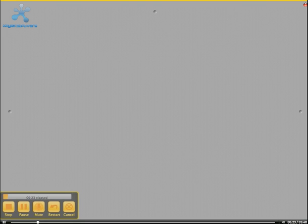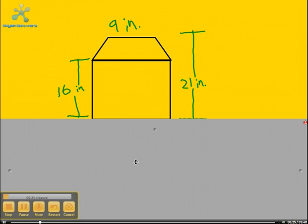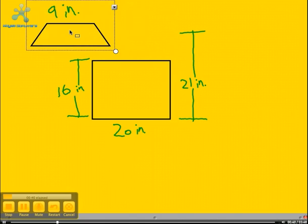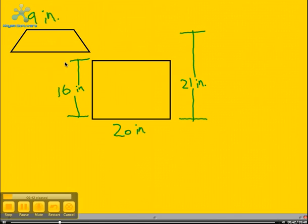Now, this figure has a base of 20 inches, a side of 16 inches, and a total height of 21 inches. The top base of the trapezoid is 9 inches. Now, we have to break this figure apart, like this.